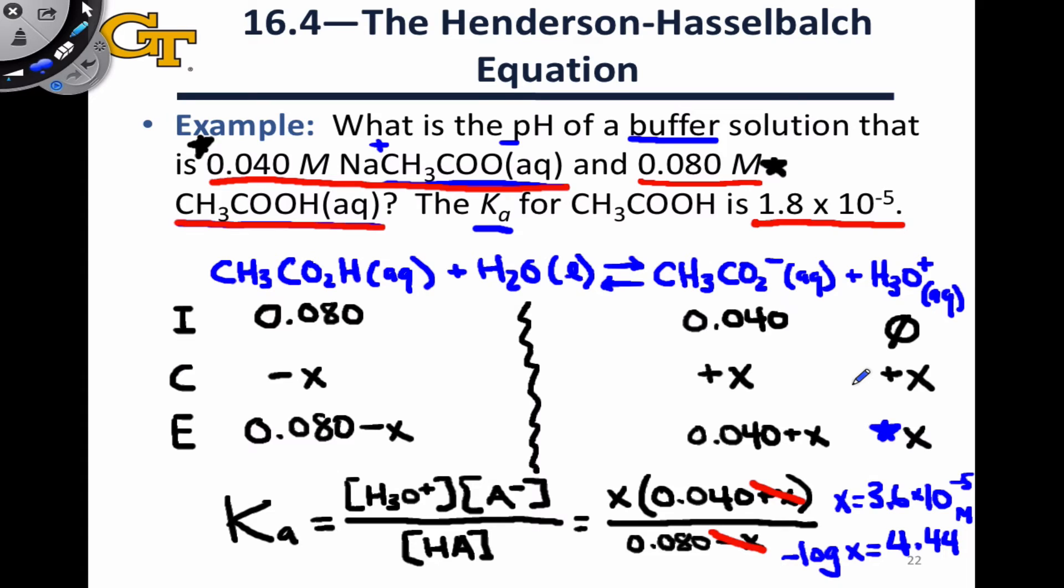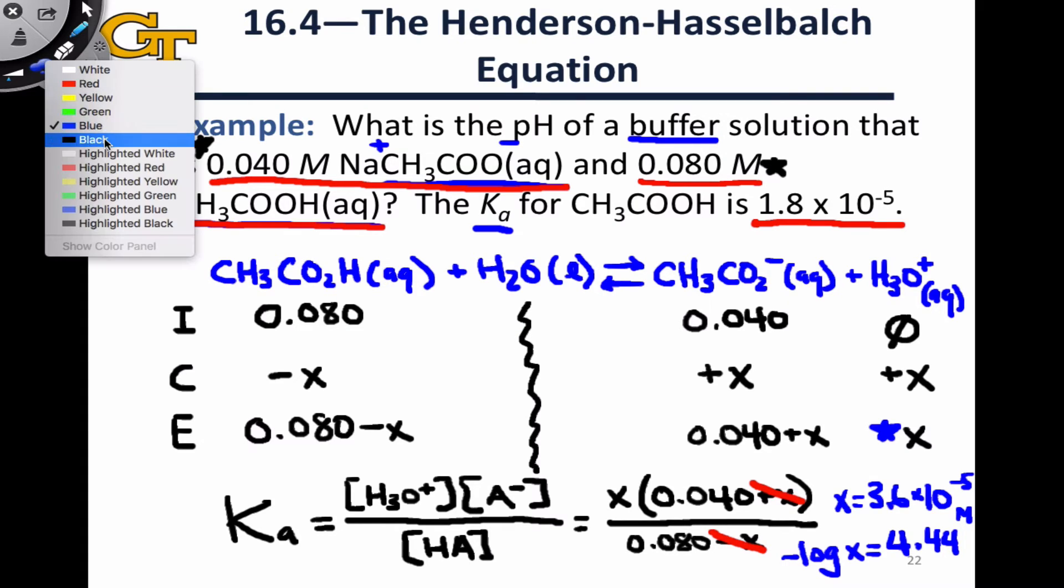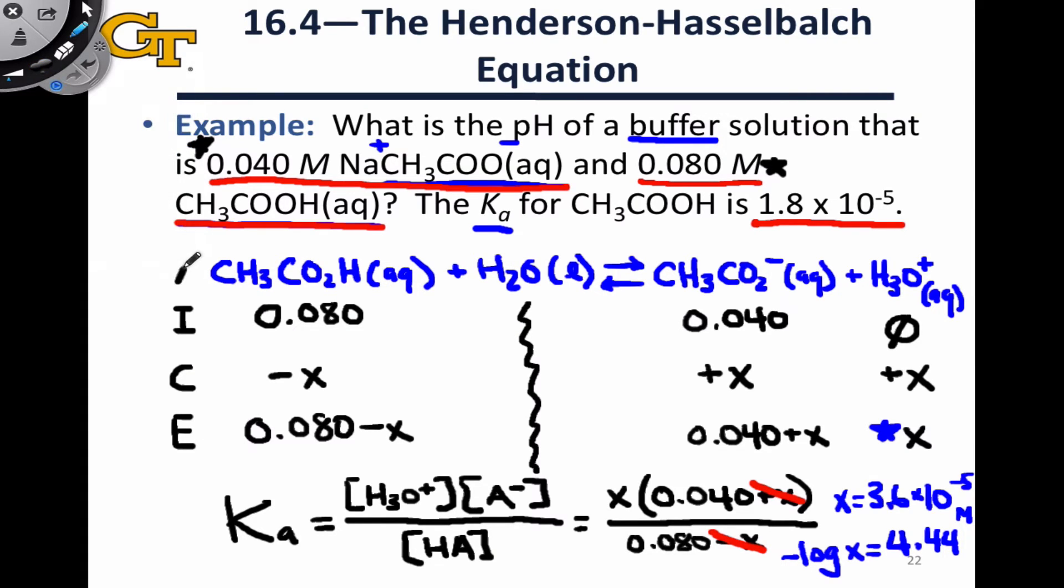So this example should feel pretty familiar, we're just applying a strategy that we've used before, the ice table method, to a new context where we start with a mixture of an acid and its conjugate base, and the reaction of interest, and this is key, you're going to be expected to be able to write and understand reactions of this type from a question prompt like this. The reaction that is key, the basis of the ice table, is the proton transfer from the weak acid to water to form hydronium and the conjugate base.